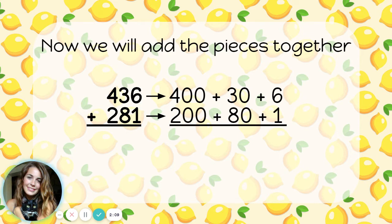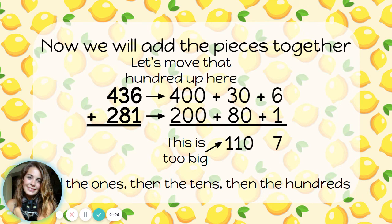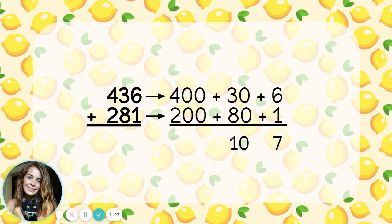I'm going to add the pieces together. 6 plus 1 is 7. 30 plus 80, that's 110. That's a little too big. I see 100 there. Let's put the 100 up here with the other hundreds. We'll leave the 10 and move that 100 up to be with the other hundreds.